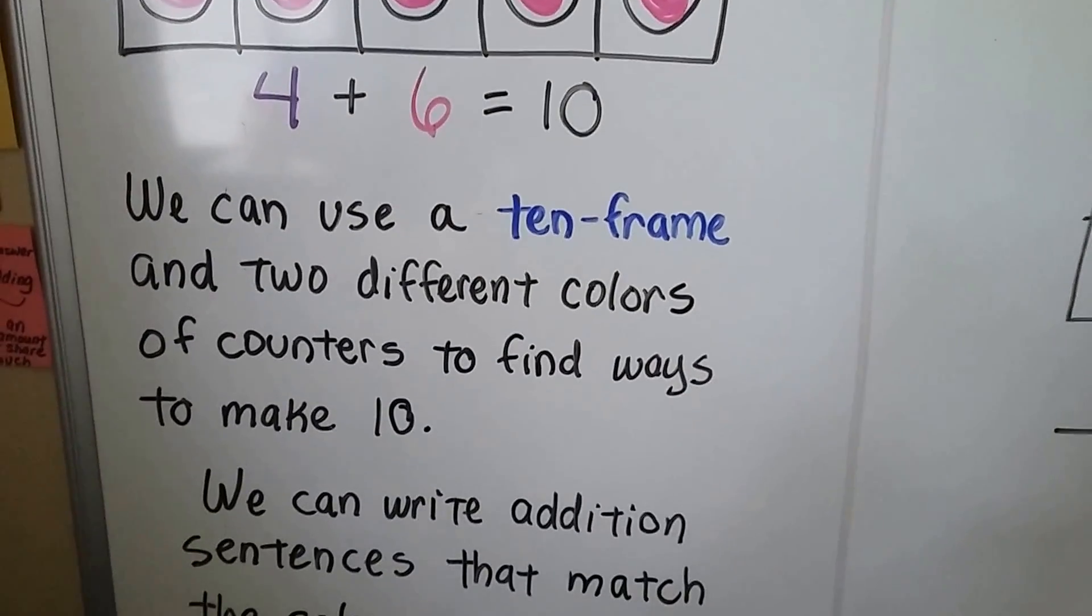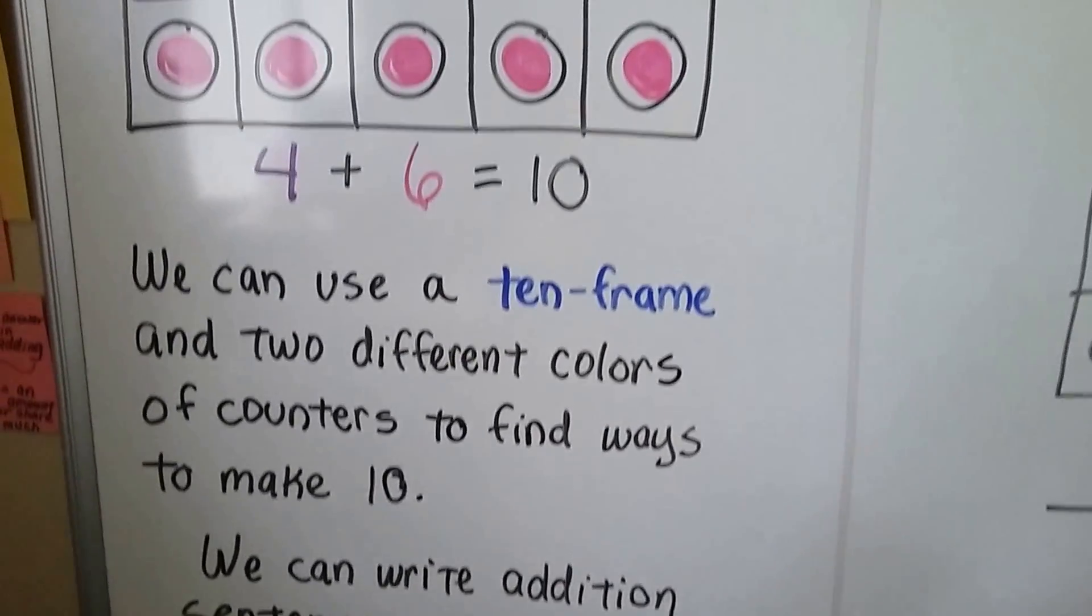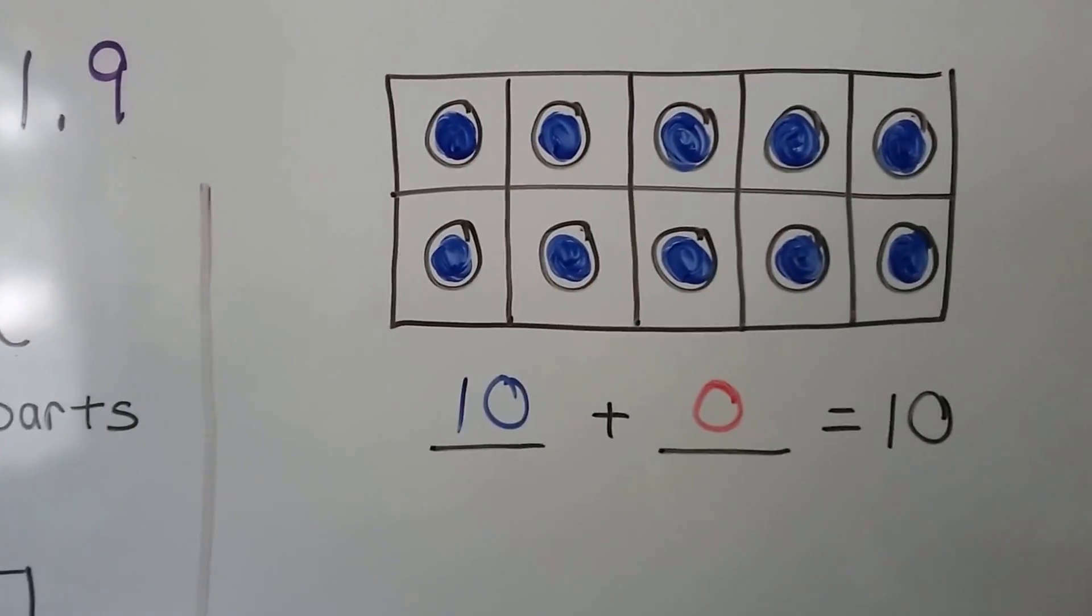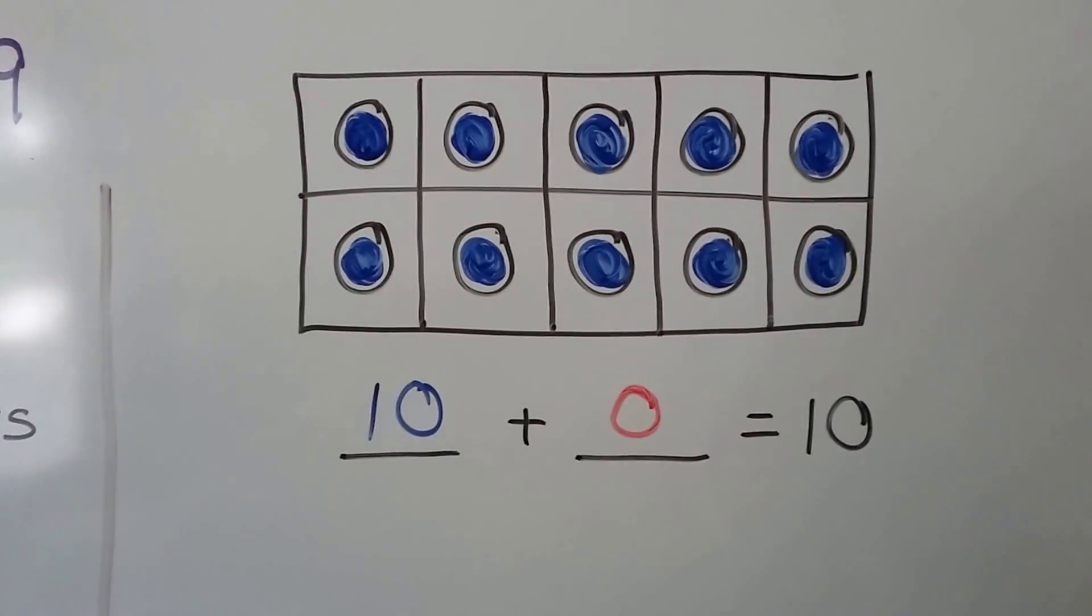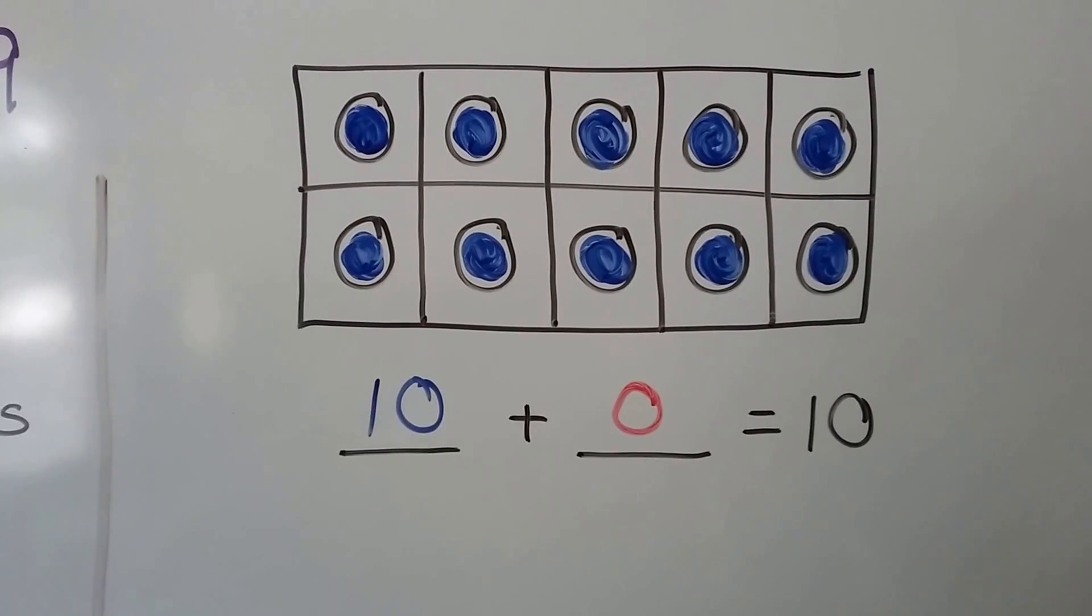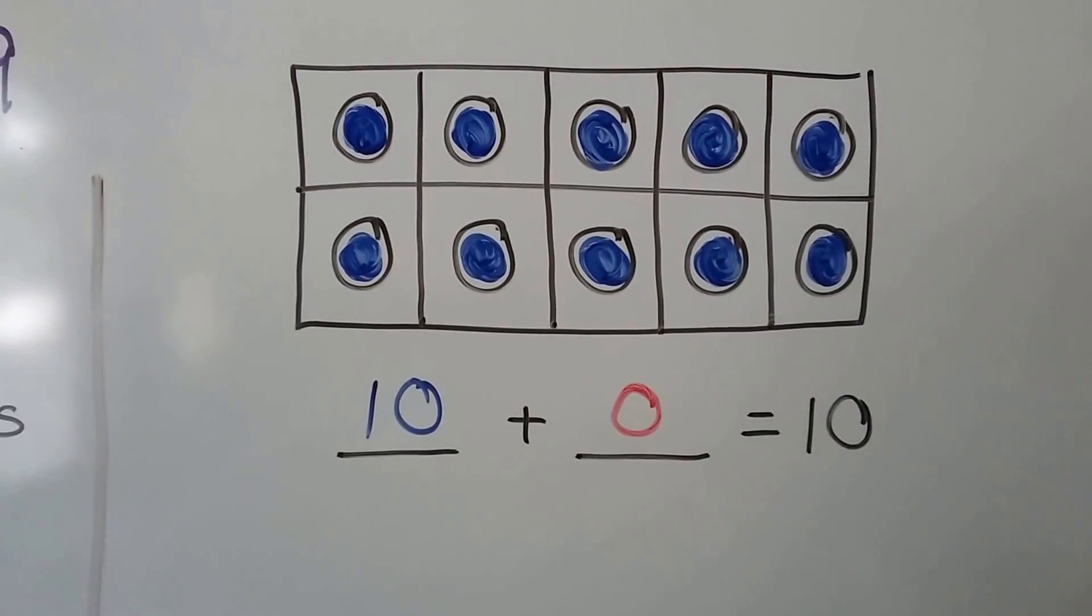We can write addition sentences that match the colors. If we had 10 blue ones and no red ones, we would have 10 plus 0, which equals 10.